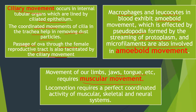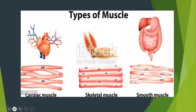Locomotion requires a perfect coordinated activity of the muscular, skeletal, and neural systems together — when they are all acting, then locomotion takes place. Now you must have studied the types of muscles in junior classes. There are three types of muscle: cardiac muscle, skeletal muscle, and smooth muscle.